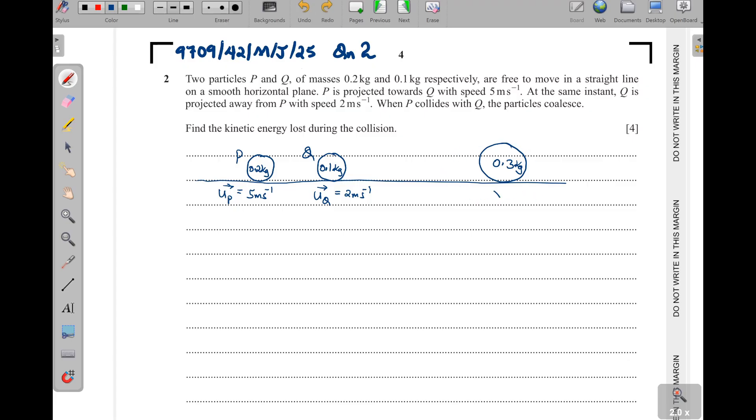The final speed here, we don't know it. When they collide and then they move together with what speed. So, using the principle of conservation of momentum, we say that momentum before collision is always equal to momentum after collision.